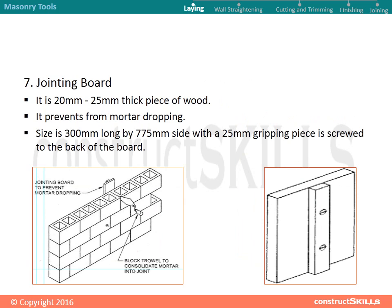Laying tools: jointing board. The jointing board is a 20 mm to 25 mm thick piece of wood that prevents mortar from dropping. Its size is 300 mm long by 775 mm wide, with a 25 mm gripping piece screwed to the back of the board.